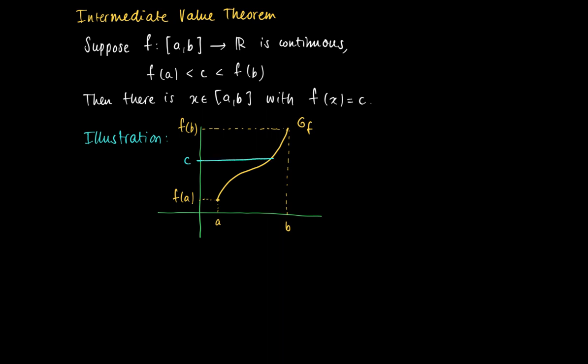Now take C and look at the level C. Then the line y equals C intersects for some x in between a and b, intersects with the graph of F.